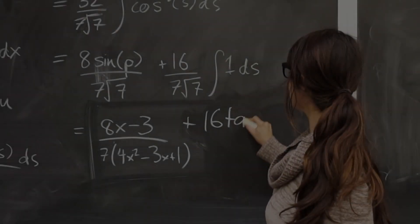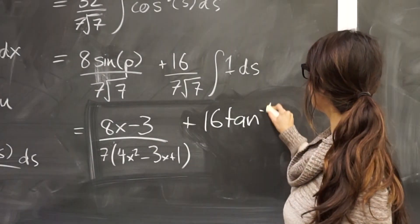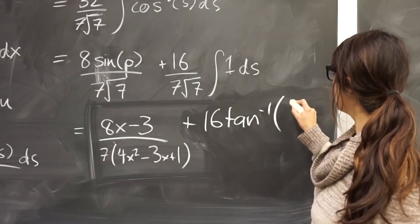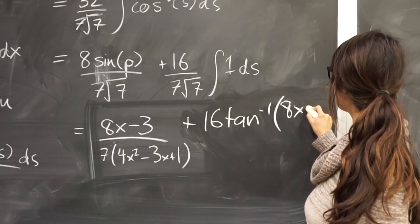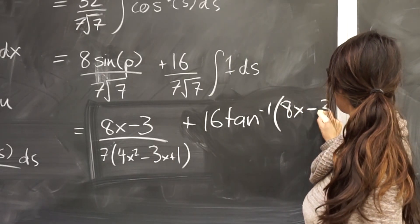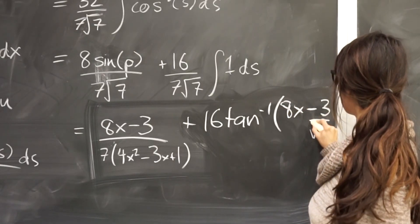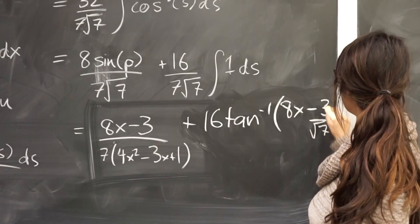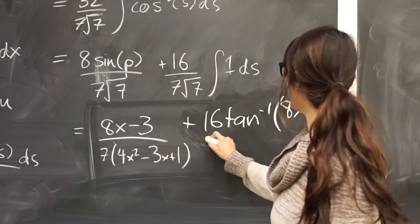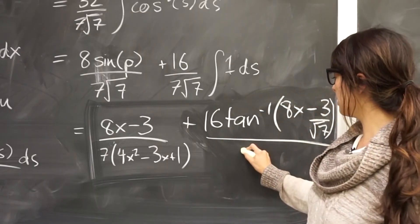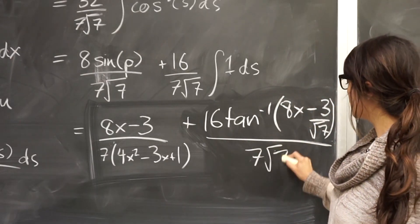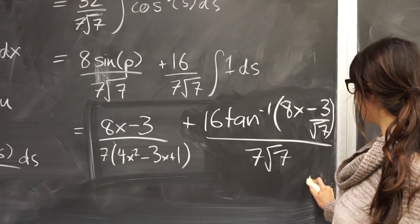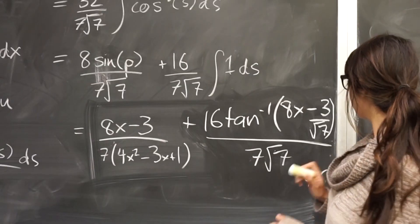Plus 16 tan to the negative 1 multiplied by 8x minus 3 over root 7, all over 7 root 7, plus constant.